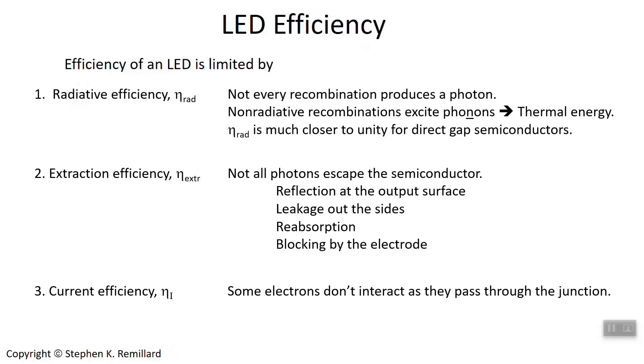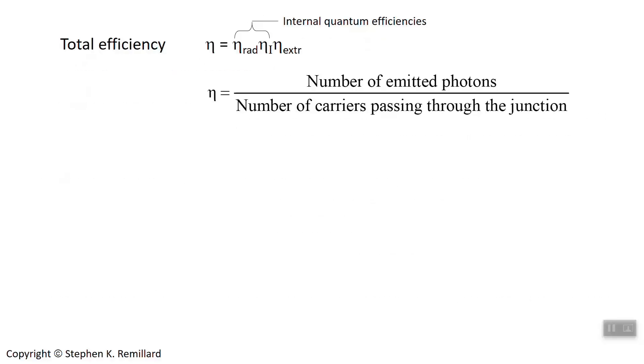Those are our three leading factors of inefficiency in LEDs, and they can all be present. They're all numbers between 0 and 1 because they're efficiencies. And if you have multiple inefficiencies, the total efficiency is the product of all of those efficiencies. So you can just multiply them together to get the total efficiency.